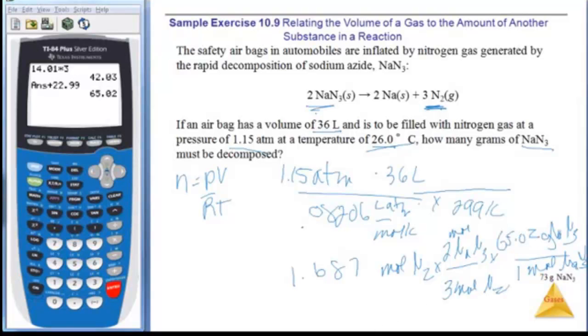Alright, so let's plug and chug, so I've got 65.02 times 2 times 1.687 equals, divide by 3. Keep your fingers crossed, and we get a nice 73 grams of sodium azide. It looks like I want three sig figs.